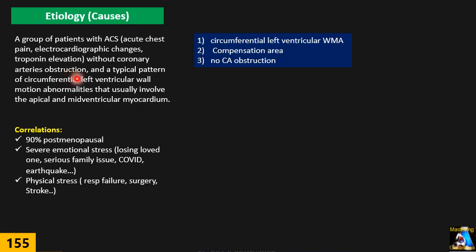As you know from coronary artery disease, when one major or accessory branch of the coronary artery is blocked, specific segments and walls are involved. In this cardiomyopathy, the wall motion abnormality is completely unique and circumferential — most of the time involving the apex and mid left ventricle, with circumferential hypokinesis, dyskinesis, or akinesis in those areas.